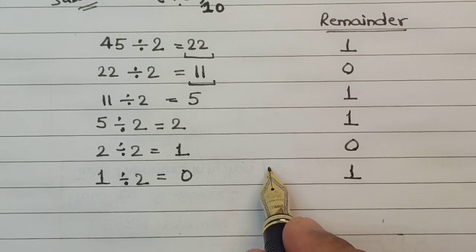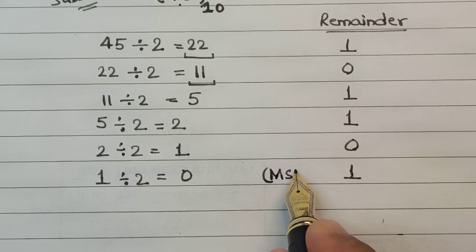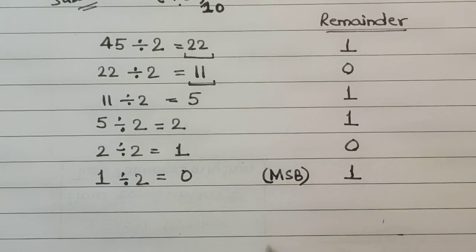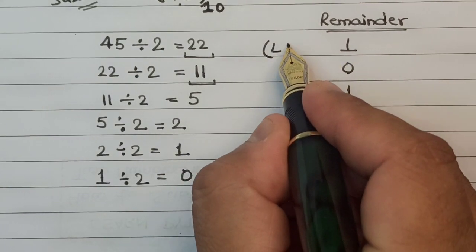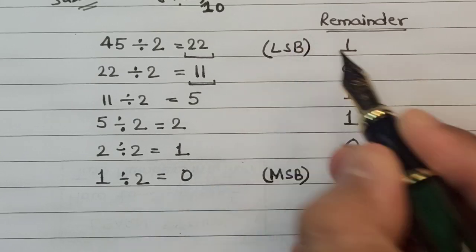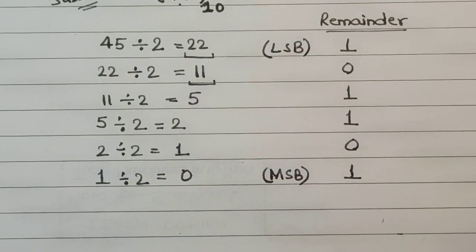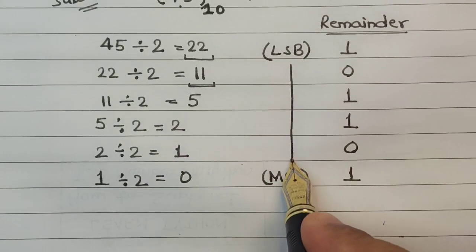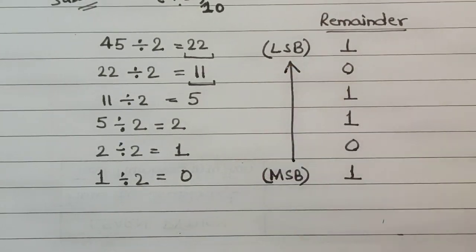that is 1, this is known as the MSB, that is the most significant bit, and the topmost is known as the LSB, that is the lowest significant bit. So all we do now is move from MSB to LSB.